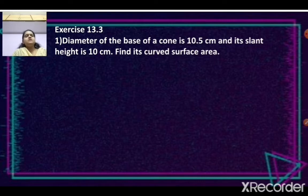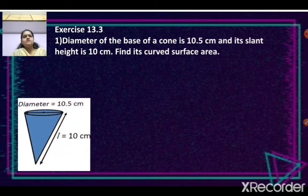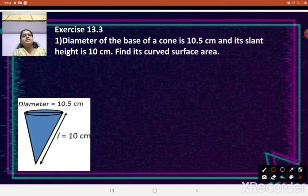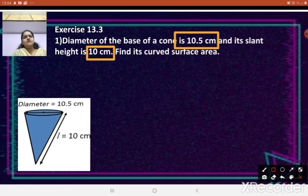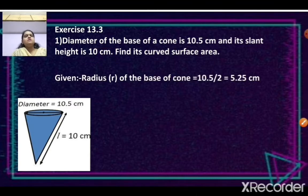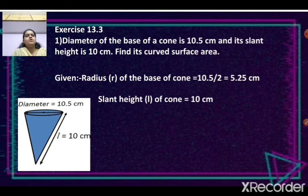First sum: The diameter of the base of a cone is 10.5 cm and its slant height is 10 cm. Find its curved surface area. The diameter is given as 10.5, so we convert it to radius: 10.5 ÷ 2 = 5.25 cm. The slant height L is given as 10 cm. We will use both values with the formula for curved surface area, which is πRL.